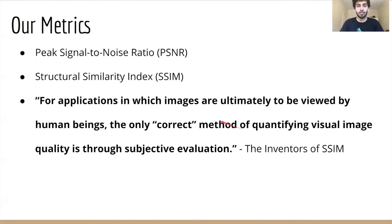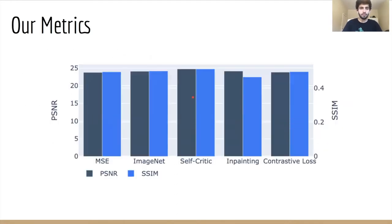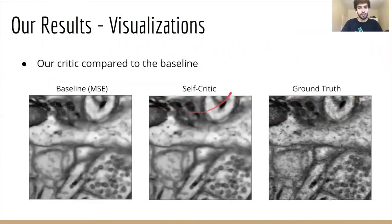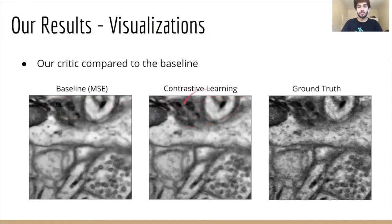In order to judge the performance of each of our models, we looked at the PSNR and SSIM scores as our metrics, but more importantly, we also used subjective human evaluation by looking at the visual predictions of each of the models. In terms of the metrics, the self-critic model appeared to perform the best on the real-world test set, giving us the highest PSNR and SSIM scores. When we looked at the visual predictions, though, the story was less clear. Here's how the baseline MSE model does compared to the original low-resolution and the original high-resolution image. When we compared the baseline model to the self-critic, their visual predictions appear to be very similar to each other. However, when we compared the baseline model to the self-supervised learning critics, the self-supervised learning critics appear to produce visual predictions that have better texture and structural details.